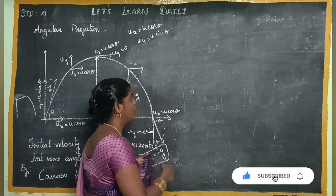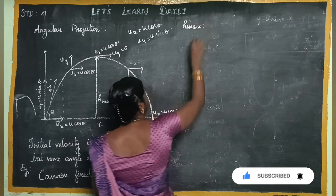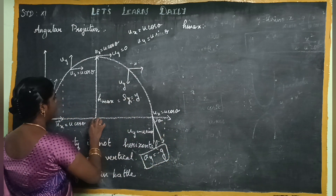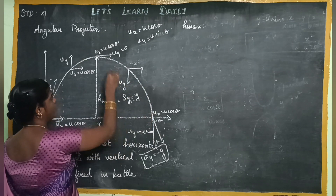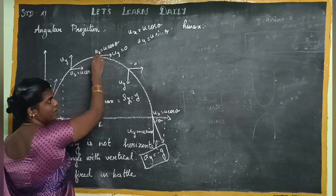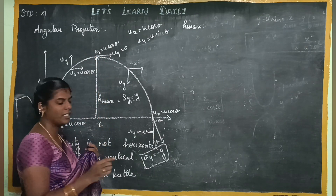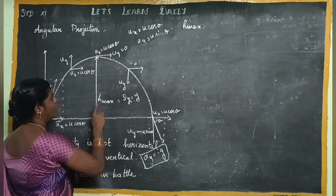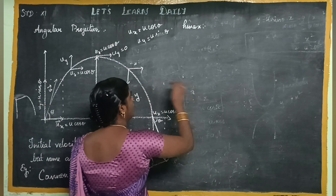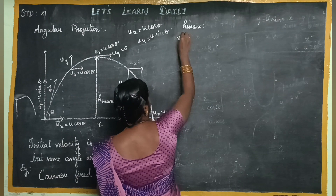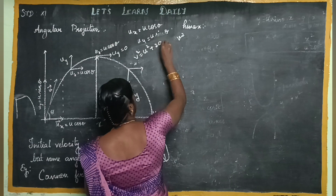We will use a third equation of motion. What is the maximum height? The maximum height is in your projectile path. The uy value is 0 at the height maximum — that is the ground level to maximum height. The third equation of motion is: V squared equals u squared plus 2as.